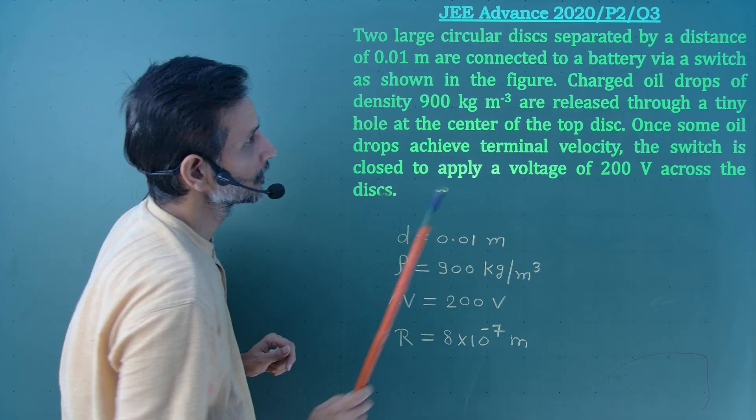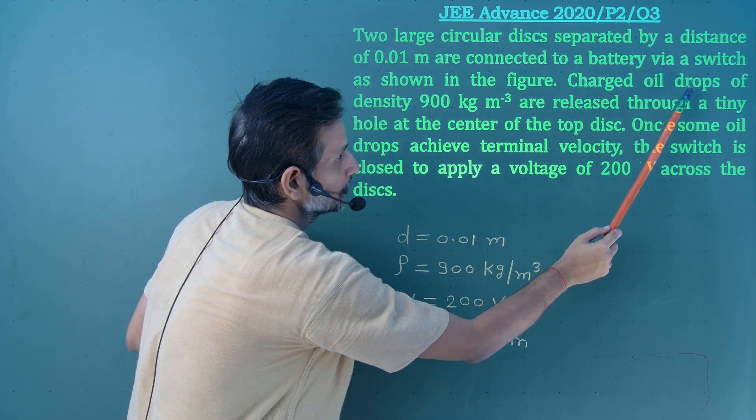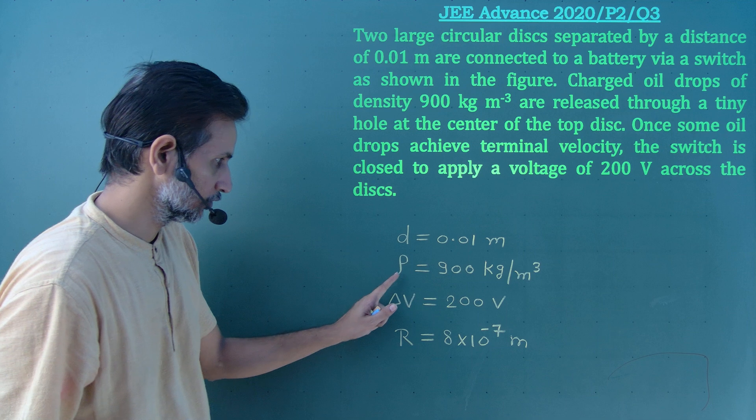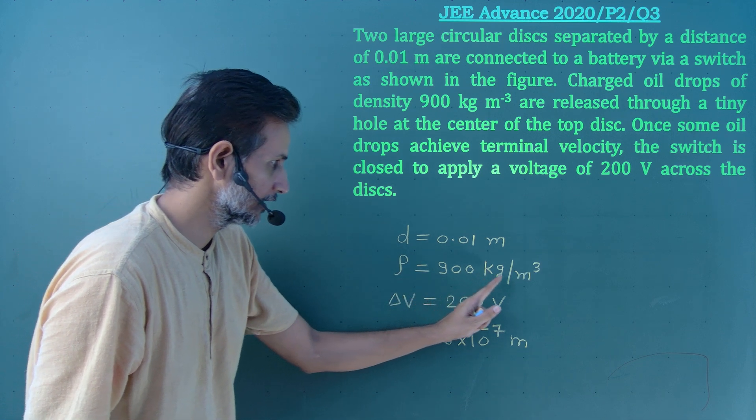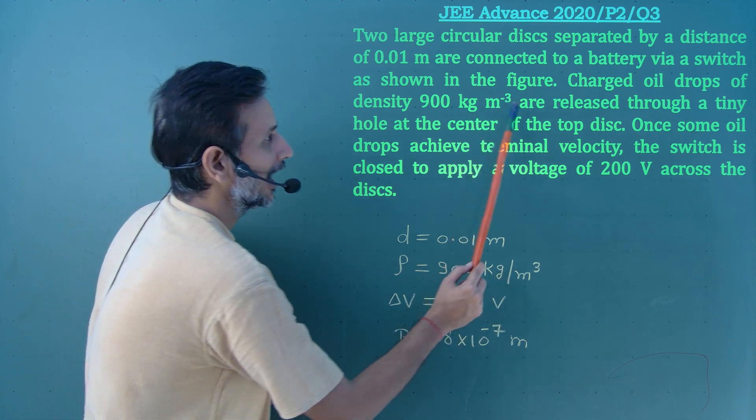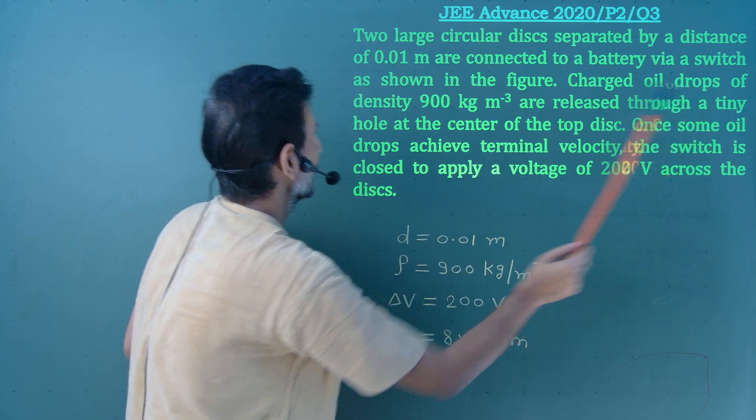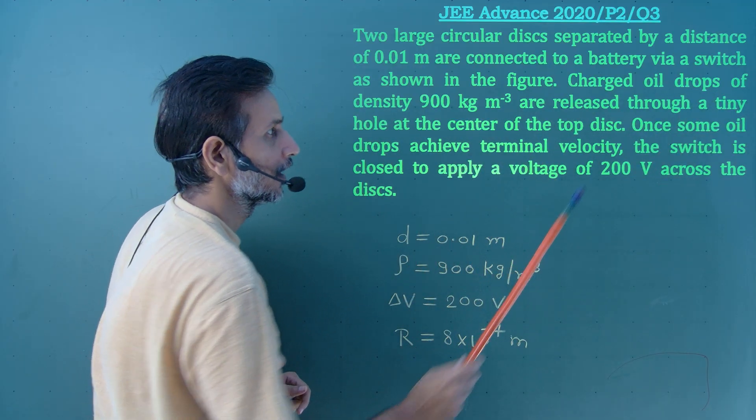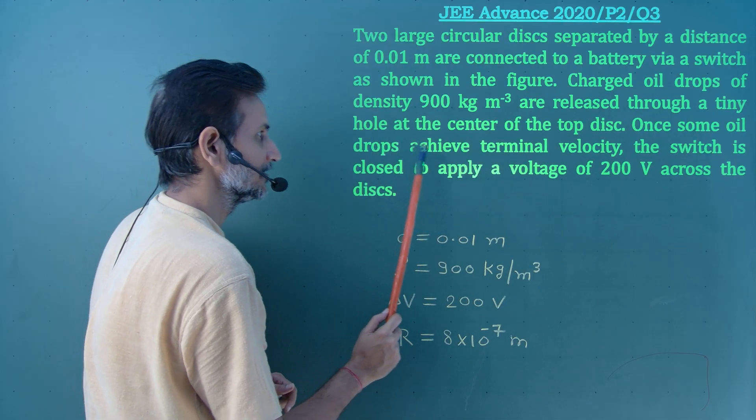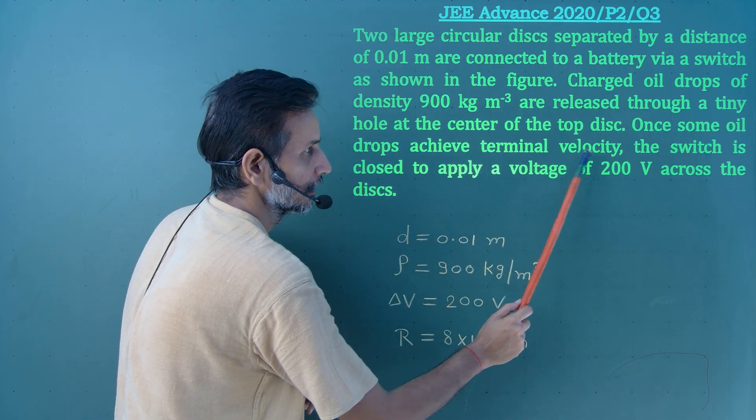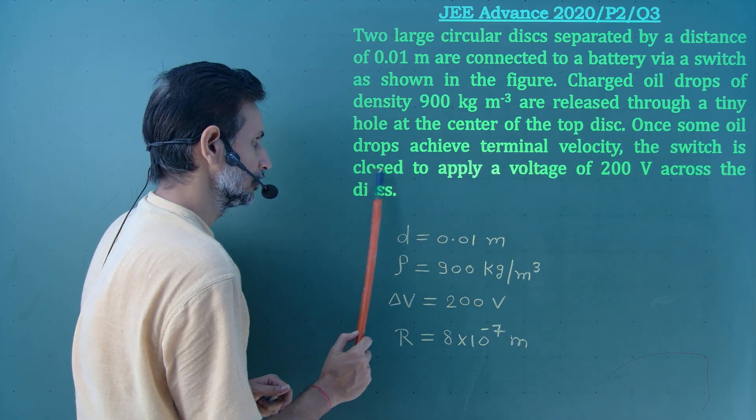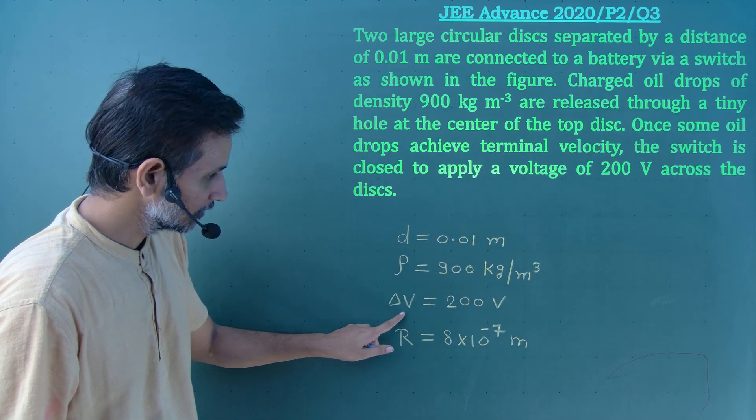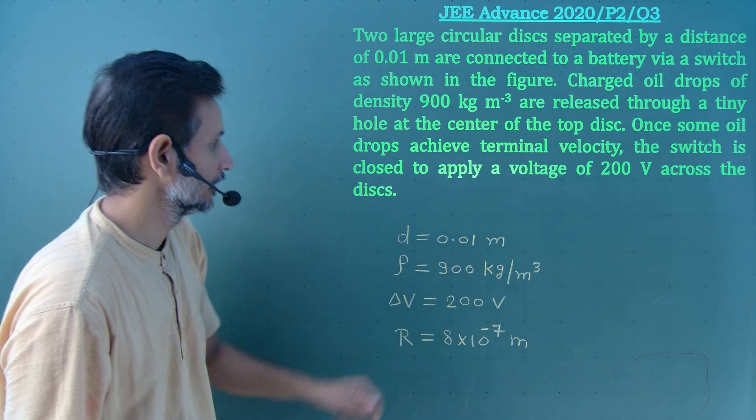There is a figure I will show you. Charged oil drops of density 900 kg per meter cubed, rho equal to 900 kg per meter cubed, are released through a tiny hole at the center of the top disk. Once some oil drops achieve terminal velocity, the switch is closed to apply a voltage of 200 volts. Applied voltage delta V equal to 200 volts.